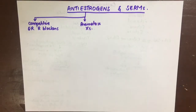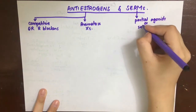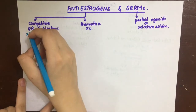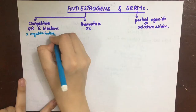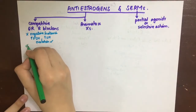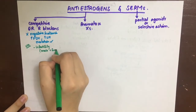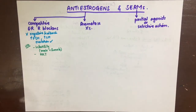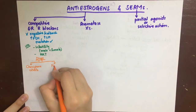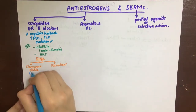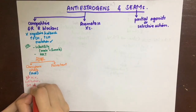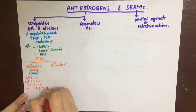Selective estrogen receptor modulators are either partial agonists of estrogen receptors or have selective action on some tissues. The competitive estrogen receptor blockers inhibit the negative feedback of estrogen on the anterior pituitary, thus increasing FSH and LH levels leading to ovulation. This can be used in female infertility, male infertility, and assisted reproductive technology. The drugs acting this way are clomiphene citrate and fulvestrant. Clomiphene citrate is given orally; adverse effects include hot flushes, nausea, vomiting, headache, hair loss, multiple pregnancies, ovarian cysts due to ovarian hyperstimulation, malignancy, weight gain, and breast discomfort.